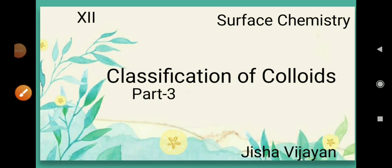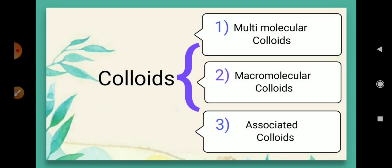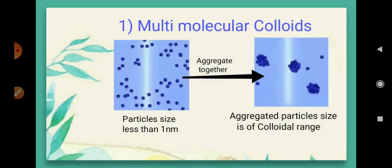Hello students. Let us do the classification of colloids on the basis of type of particles of dispersed phase. We have already finished two other classifications. This is the third classification. On the basis of type of particles of dispersed phase, it is classified into three categories: multi-molecular colloids, macromolecular colloids, and associated colloids. Now let us discuss each in detail.